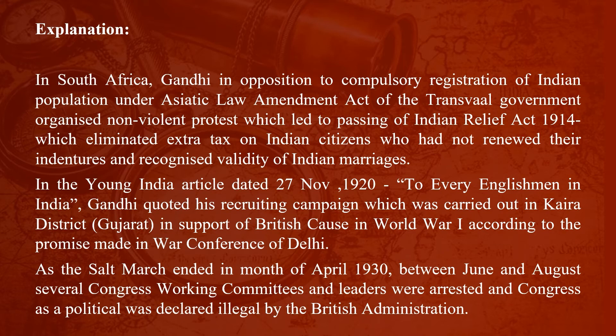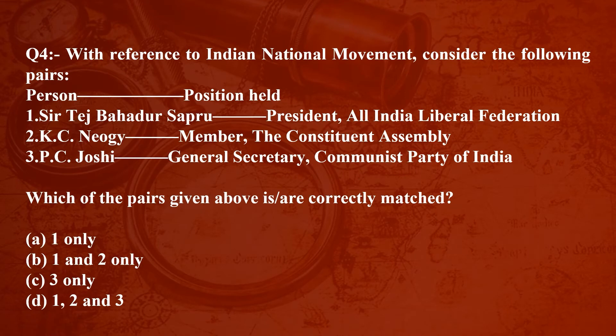As the salt march ended in April 1930, between June and August, several Congress working committees and leaders were arrested, and Congress as a political organization was declared illegal by the British administration.